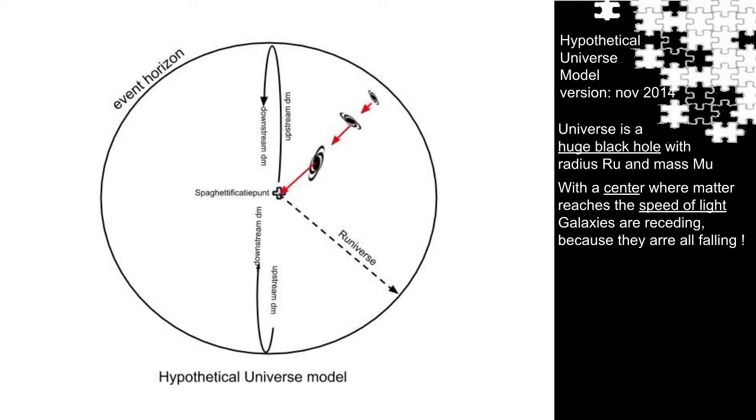Luckily, the model itself gives an answer. Have a look at the red arrows that represent the direction of falling galaxies. All three galaxies are falling towards the center.